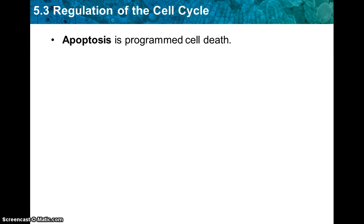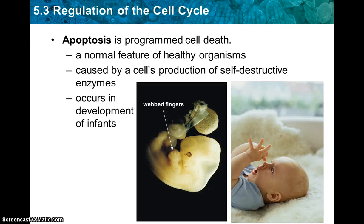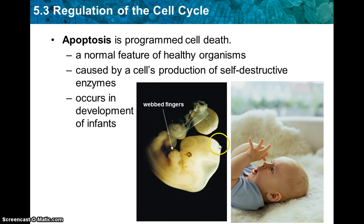Apoptosis is programmed cell death. It is a normal feature in healthy organisms, caused by the cell's production of self-destructive enzymes. This occurs in the development of infants. One example is that in early stages of development, human embryos have webbing between their fingers and toes. Before the baby is born, these cells typically go through apoptosis, and most babies are born without webbing. It's actually self-destructing cells that break your fingers and toes apart when you're an embryo.